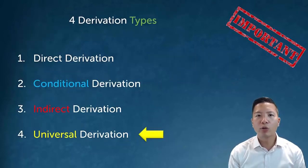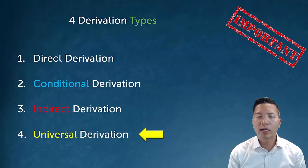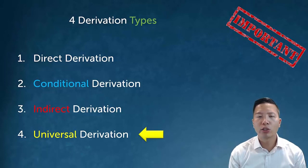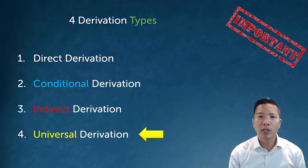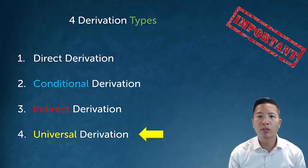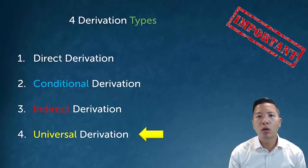In practice, universal derivation looks like this: if I need to show 'for all alpha, phi alpha,' I immediately follow it with a show of the instantiation — I show 'phi alpha.' This only works if alpha is arbitrary. If I can show that phi alpha is true where alpha is arbitrary and I know nothing about it, then I can finish the universal derivation and generalize to 'for all alpha.' We can now add universal derivation to our derivation types: direct is when we get exactly what we want, conditional is when showing a conditional, indirect is a reductio, and universal derivation invokes an arbitrary member and then generalizes.